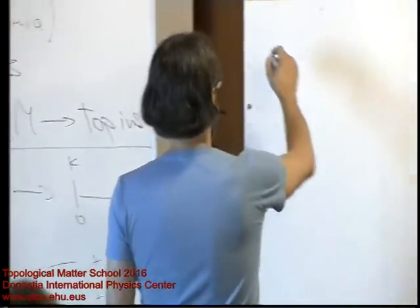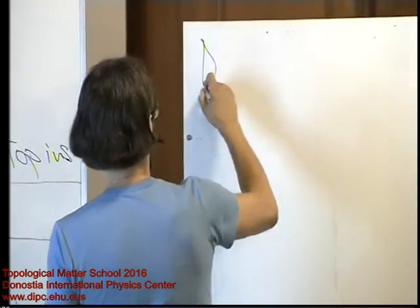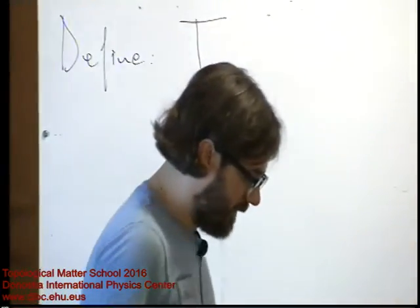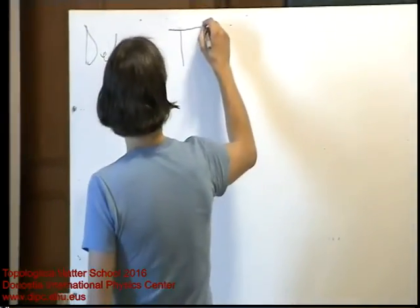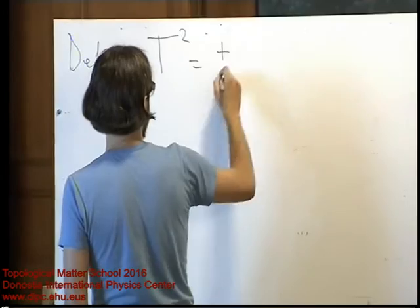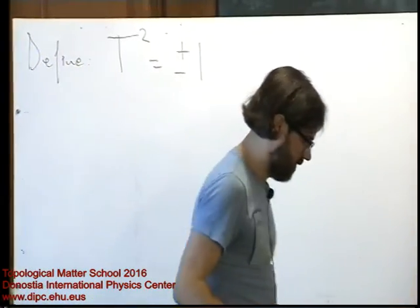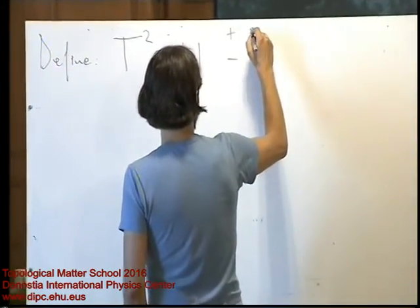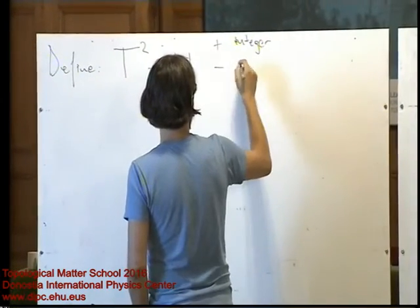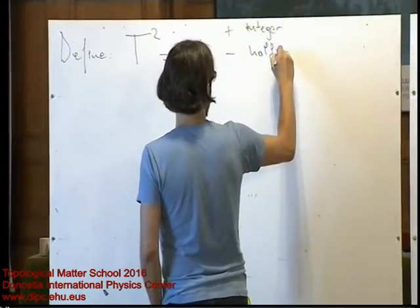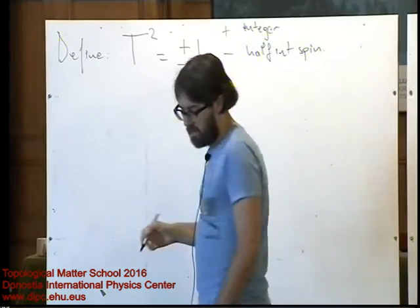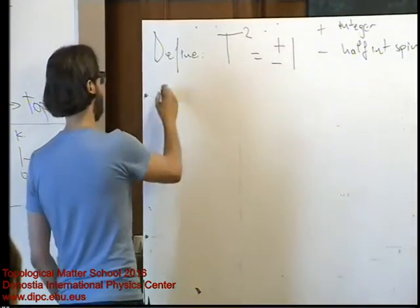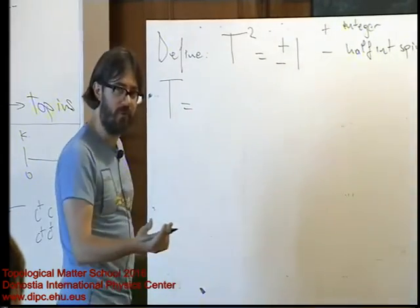First I want to define time reversal. Time reversal was already defined in many lectures before. The fundamental thing is that time reversal, for integer spin or half integer spin particles, can square to one or minus one respectively. It's an anti-unitary operator. I'm going to focus on half integer spin mostly, so T² = −1, and I'll do a quick proof of Kramer's theorem. If time reversal is some unitary matrix times complex conjugation — you need this unitary matrix to keep norms of states — and complex conjugation because time reversal changes momentum, so it has to change the commutator, which is i, and must contain complex conjugation.